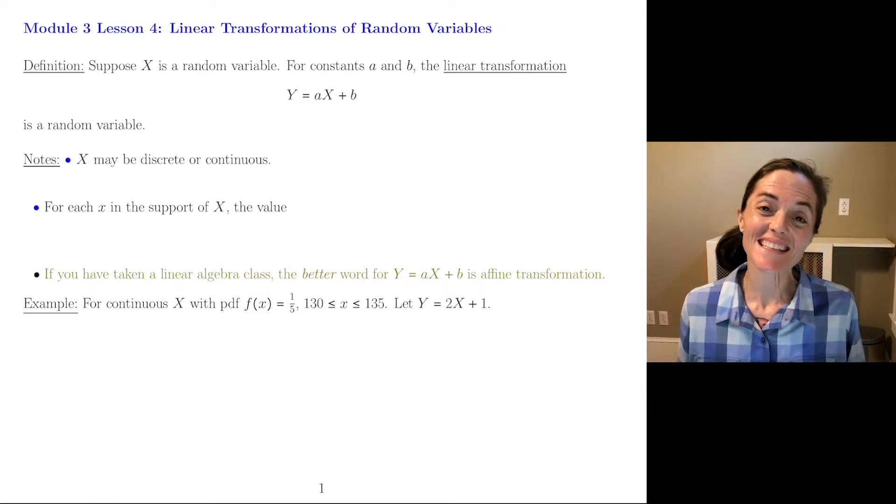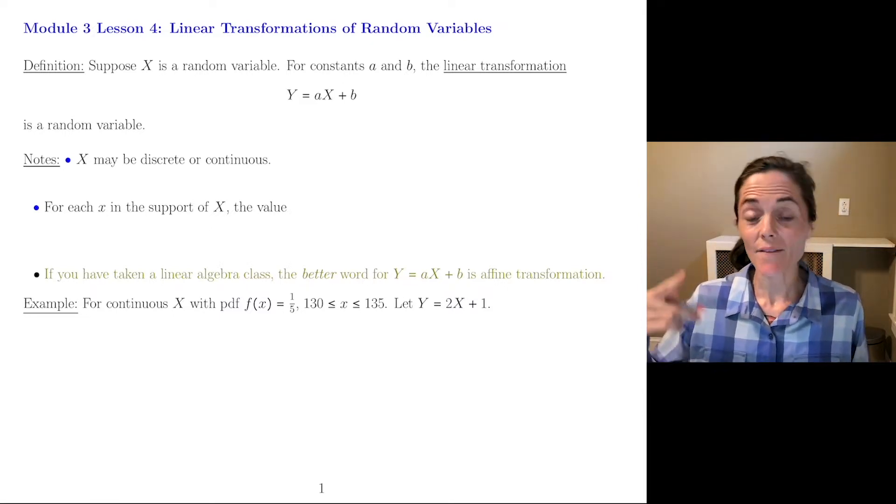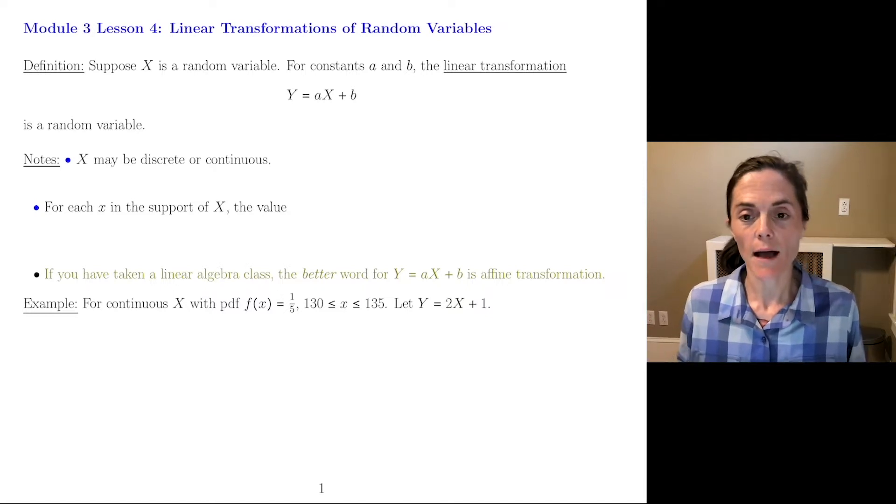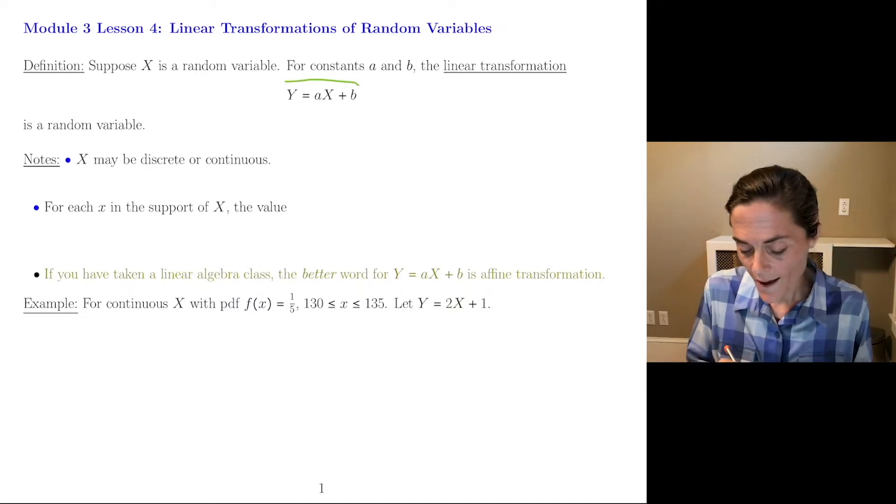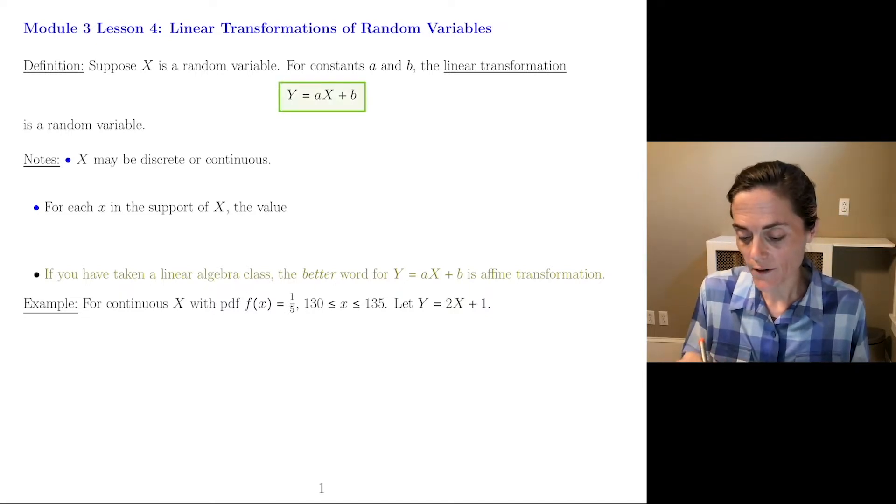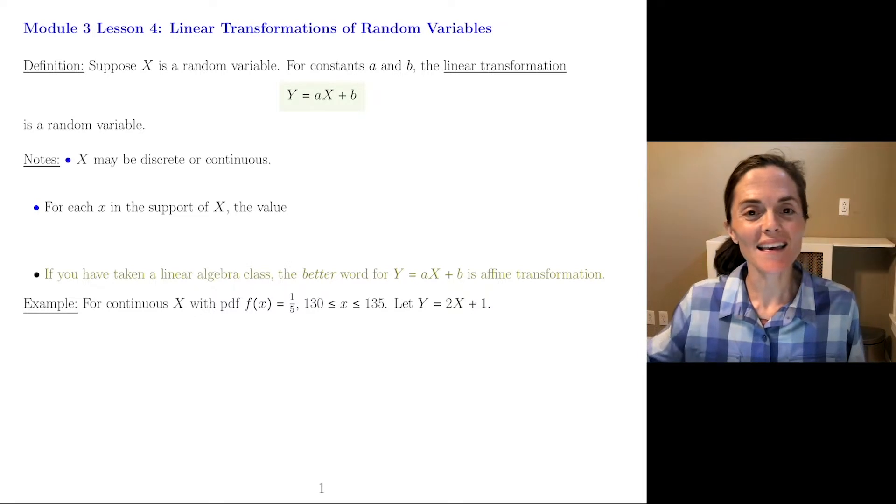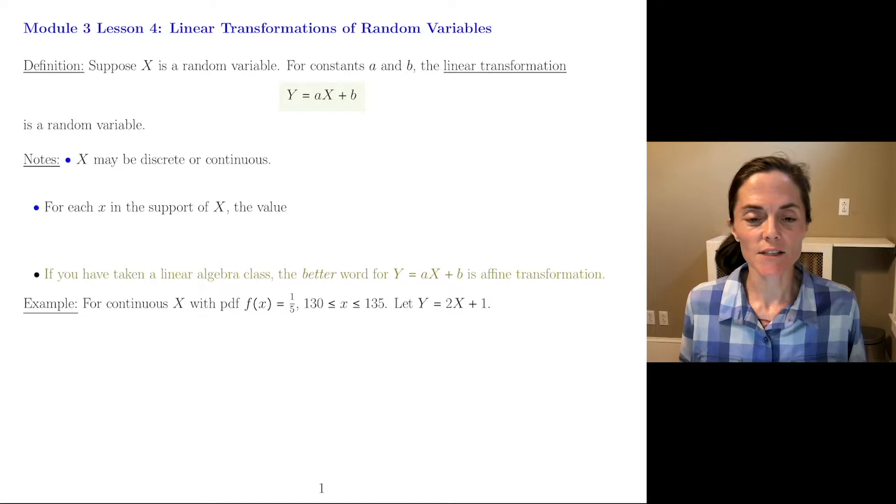Well, first let's get into a definition. Suppose we have any random variable capital X, A and B are numbers, then this capital Y, this is a new random variable. Capital Y is A, capital X plus B, and this is what's called a linear transformation.